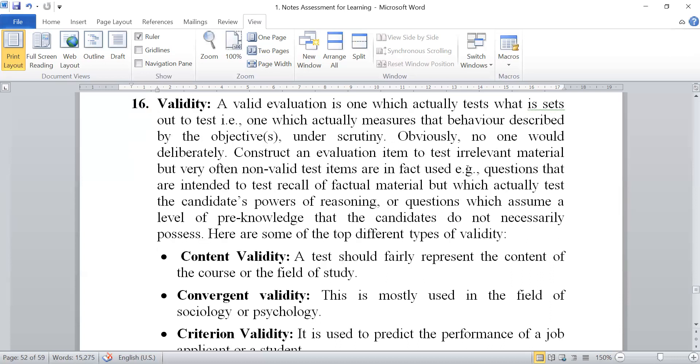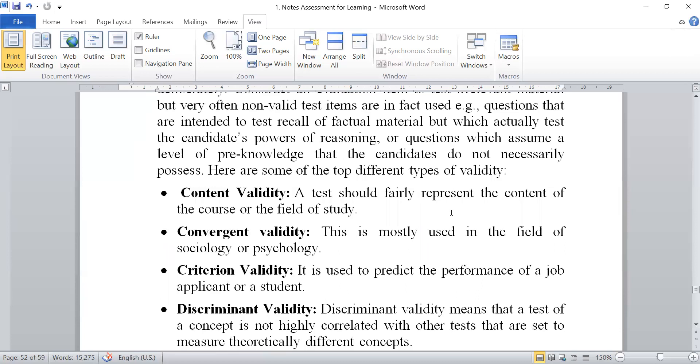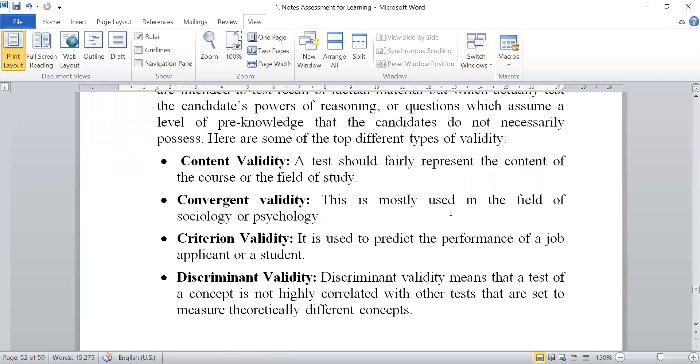And there are many types of validity, but here I have given only four types of validity in evaluation. One is the content validity, another is the convergent validity, next is criterion validity, and one is discriminant validity.